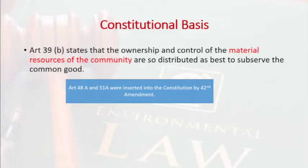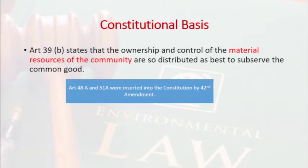The constitutional basis emanates from Article 39B, which states that material resources of the community are to be distributed to best subserve the common good. All natural resources are material resources and must benefit the entire population. Two further articles were inserted by the 42nd Constitutional Amendment: Article 48A and Article 51AG.